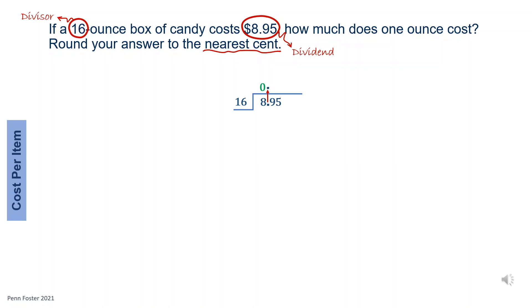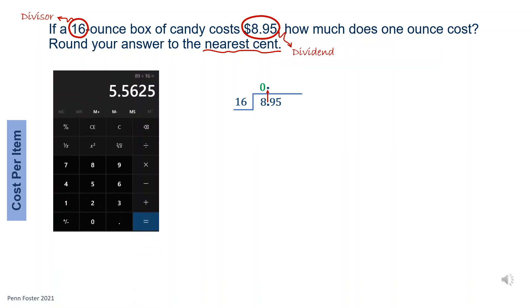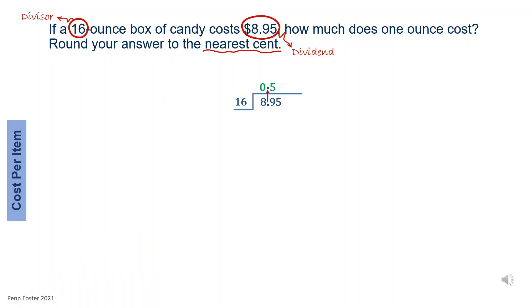Group the first two digits from the dividend. Divide 89 by 16. Again, if not sure, use a calculator. 16 goes 5 times into 89. Write 5 in the quotient right above 9. Now multiply 5 times 16. It's 80. Subtract 89 minus 80. It's 9. Bring down 5 from the dividend.